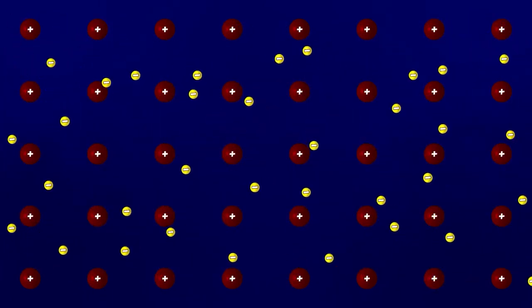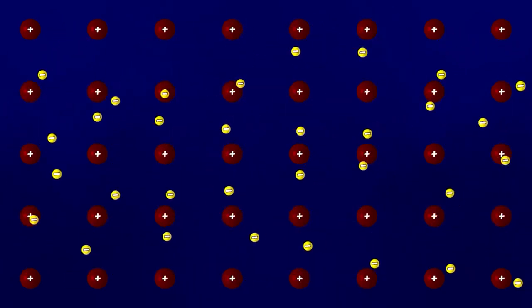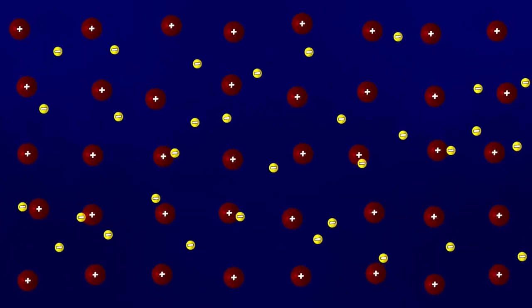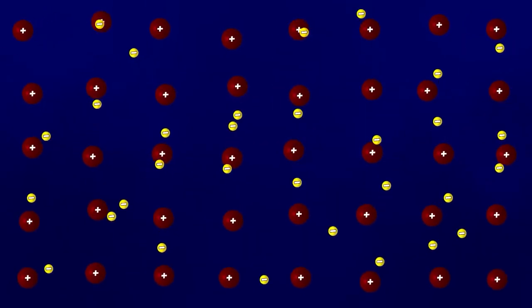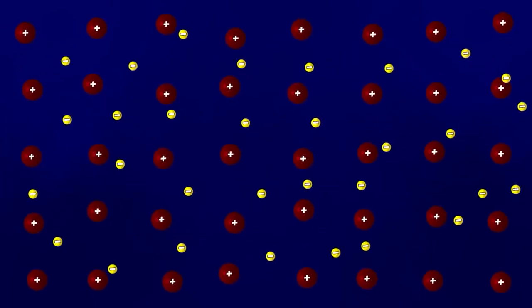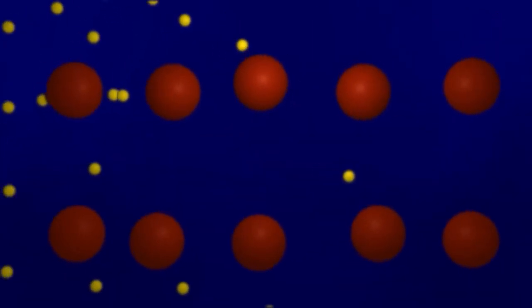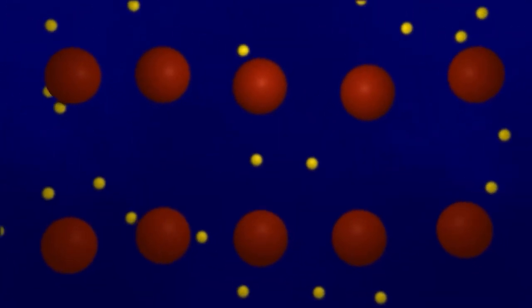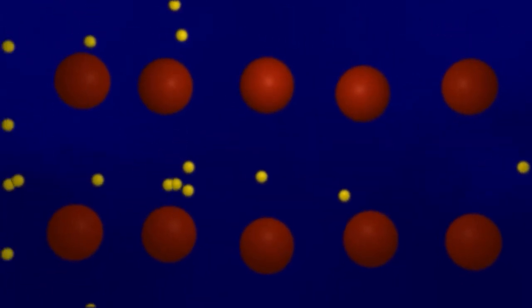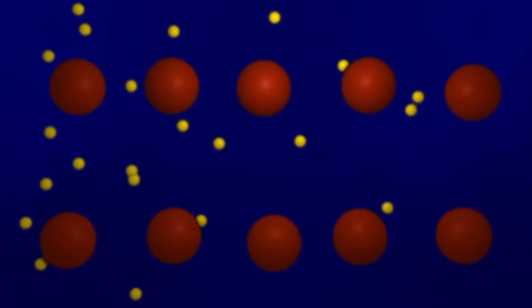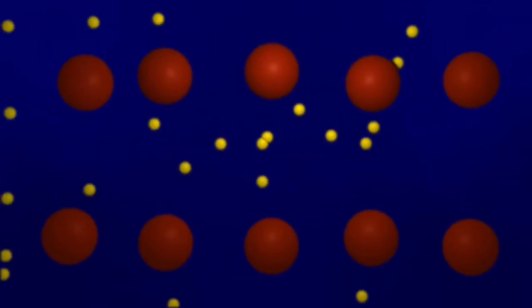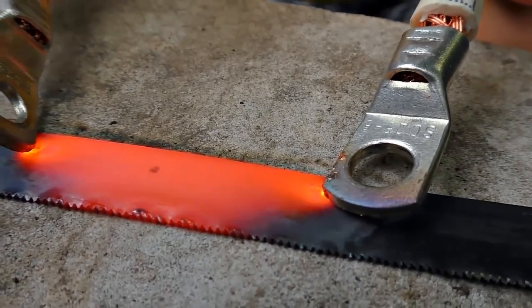Additionally, the ions that form the crystal lattice also partake in thermal motion. They don't stay fixed in their lattice positions. Instead, they oscillate around these points within quite broad limits. Thus, in reality, the flow of electric current through a conductor doesn't resemble neat rows of disciplined electrons marching between neatly arranged layers of ion columns. Electrons, in their movement through a conductor, continually collide with both ions and each other. In this process, the kinetic energy of the drift motion of electrons constantly diminishes, while the energy of their chaotic thermal motion increases. In simpler terms, due to the presence of electrical resistance in the conductor, the current weakens, but in return, the temperature rises.